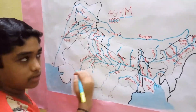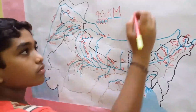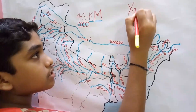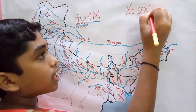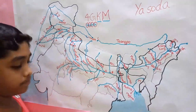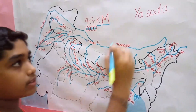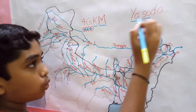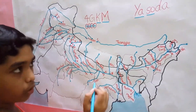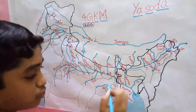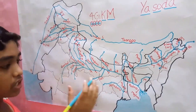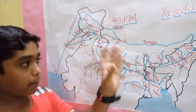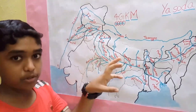Now let's see the mnemonic for the right bank tributaries. It is a name — Yashoda. In this, Ya stands for Yamuna, Sho or So stands for Son, and Da stands for Damodara. So Yamuna, Son, and Damodara. Now we have completed the trick for the names.